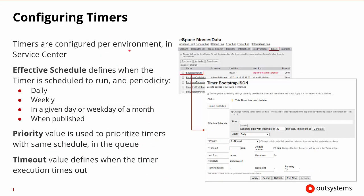We can configure timers per environment. We're scheduling things according to some period — they can be run daily, weekly, on a specific day of the week, a specific day of the month, or just when they're published. Timers also have priority values, so if two things are scheduled at the same time, one could have a higher priority in the queue. There's also a timeout value, meaning if the timer is executing for too long, it will stop at that point. Here we can see a timer that is set to run daily, has a priority of three, and a default timeout of 20 minutes. We can change these settings as needed.